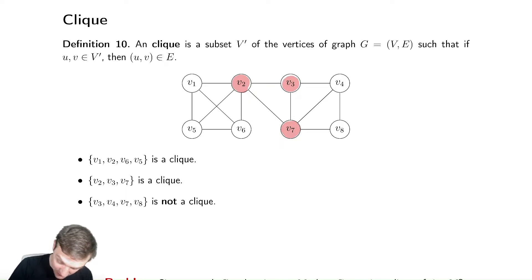Something that is not a clique, let's see if we can find one, would be V3, V4, V7, V8. It is not a clique because it is missing an edge between V3 and V8 and is therefore not a clique.